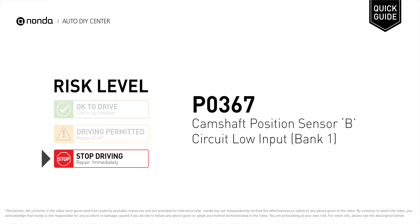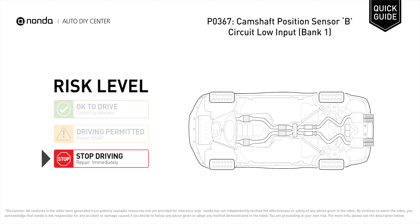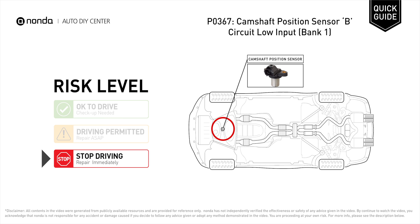P0367 is a diagnostic trouble code for camshaft position sensor B circuit low input at bank 1. Under this circumstance, stop driving and repair your vehicle immediately. P0367 means that the engine control module detected the engine camshaft position sensor circuit is not within specifications.